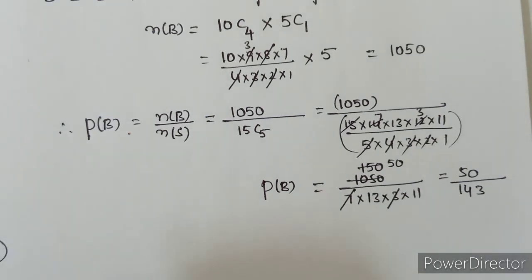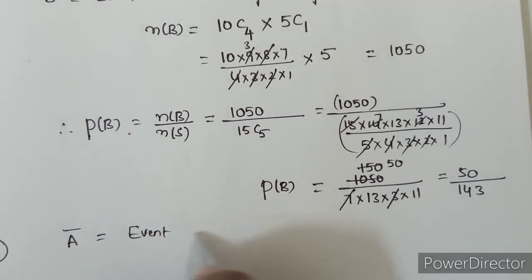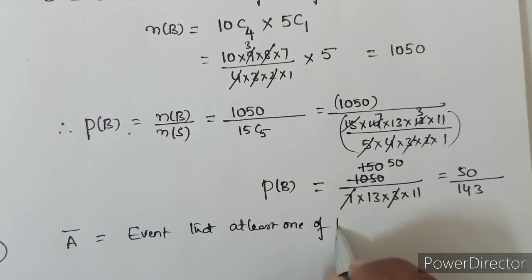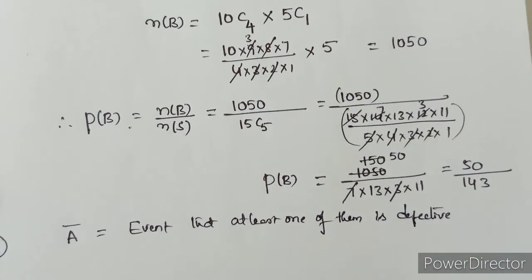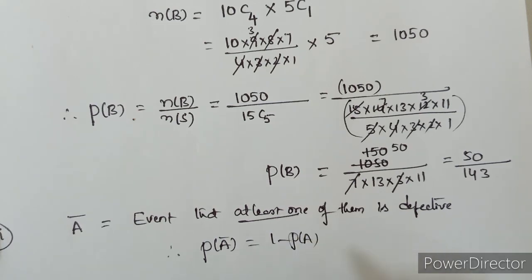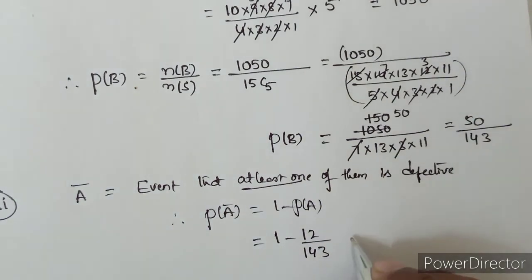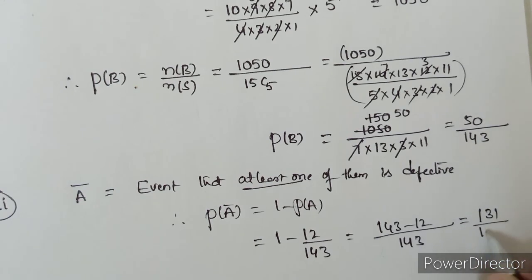The third question asks for at least one defective bulb, which is the complement of event A. So P(Ā) = 1 - P(A) = 1 - 12/143 = (143-12)/143 = 131/143.